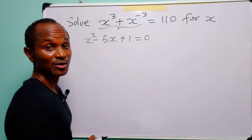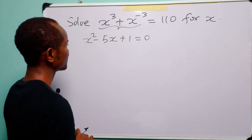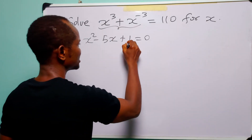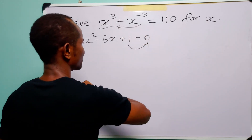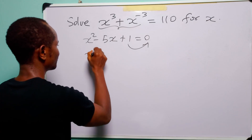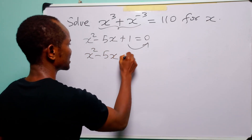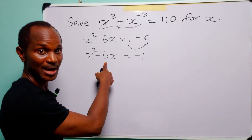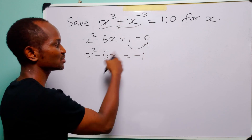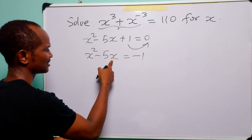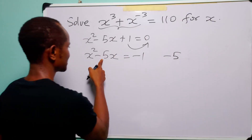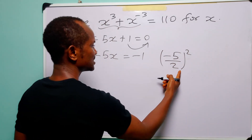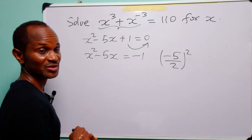We cannot factorize x² − 5x + 1 = 0, so we solve by completing the square. Since the coefficient of x² is already 1, we carry the constant to the right: x² − 5x = −1. We will add the square of half the coefficient of x to both sides. Half of −5 is −5/2, so we add (−5/2)².